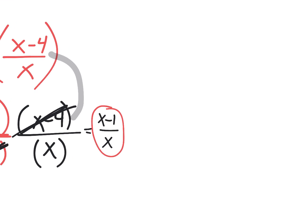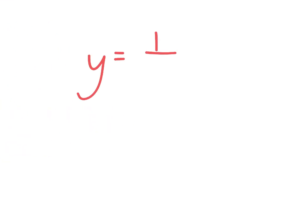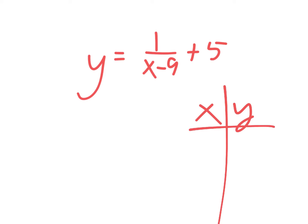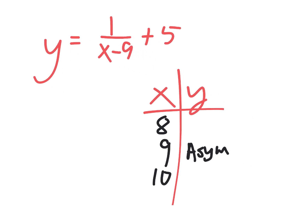What if they ask you to take this and give them three points on it? My first point would be the asymptote — think to yourself what makes this have a zero on the bottom. Eddie, what number could I put in to get the asymptote? Then I'm going to find numbers right around that, like 10 and 8, because those always work well. Put in 8: one over negative one is negative one, plus five is four — so (8, 4). Put in 10: ten minus nine is one, one over one is one, plus five is six — so (10, 6).